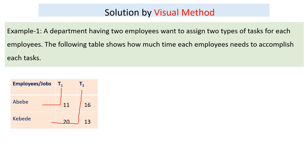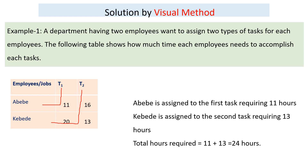It is very difficult to use just the visual method. In this case, the time required to accomplish both tasks is 11 for Abeba and 13 for Cabada, so the total time required will be 11 plus 13, which equals 24 hours.